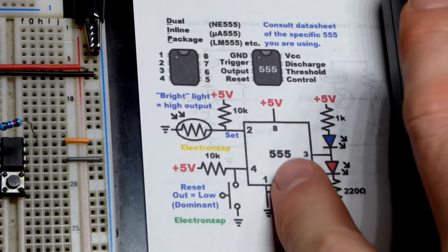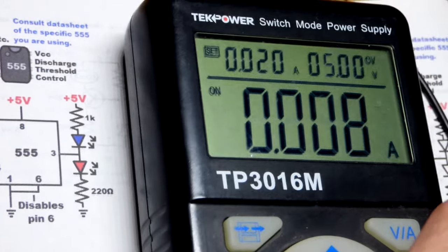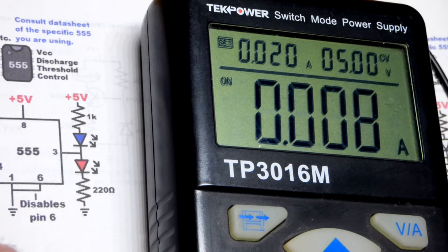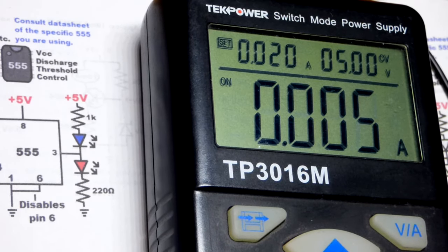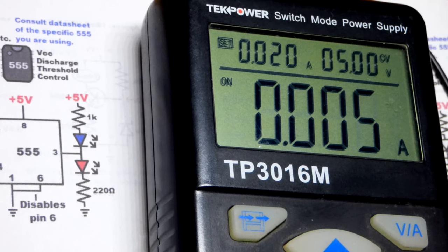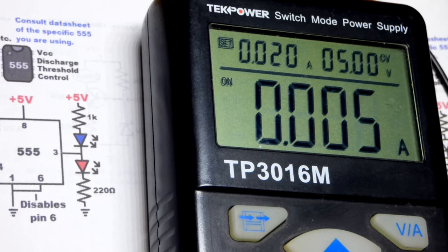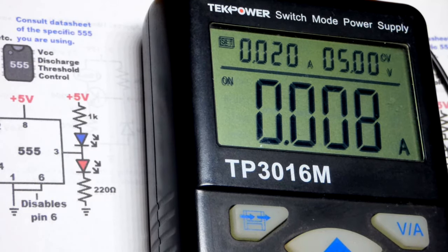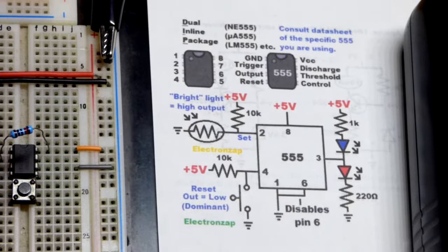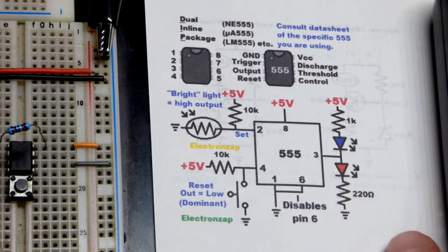Maybe something like that. But in any case we have the 555 timer that this circuit is based on and I have pin 6, the power supply is 5 volts. We got about 8 milliamps approximately when the output is high and now the output is low, it's about 5 milliamps of current.